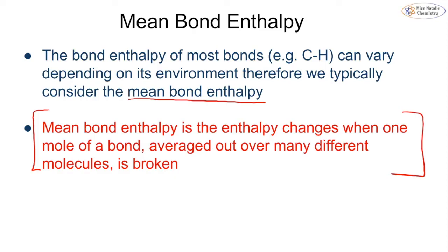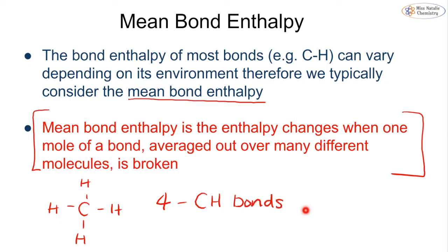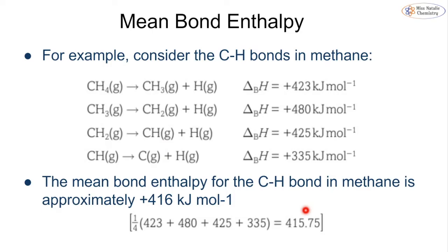The mean bond enthalpy is the enthalpy change when one mole of a bond, averaged over many different molecules, is broken. For example, in methane (CH₄) there are four C–H bonds. Breaking the first gives a bond enthalpy of 423 kJ/mol, the second 480, the third 425, and the fourth 335. Taking the mean gives an average C–H bond enthalpy in methane of approximately 416 kJ/mol.